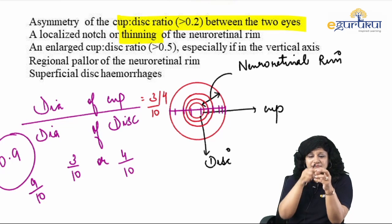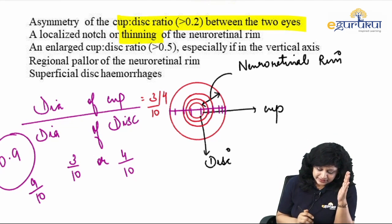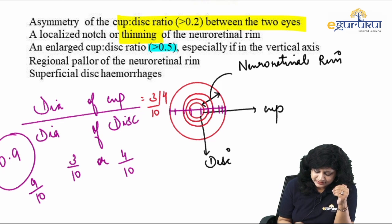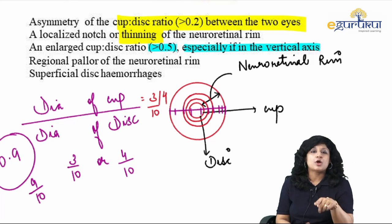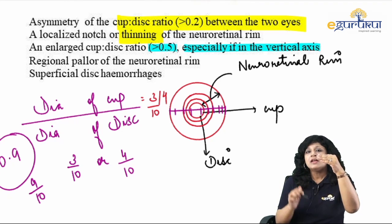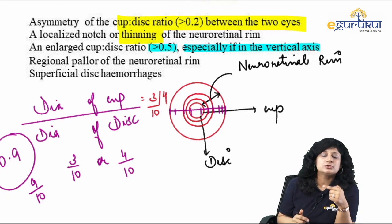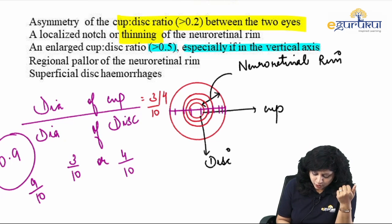There will be thinning of the neuroretinal rim — if CD ratio is more than 0.5 especially in the vertical axis, that is very significant, called vertically oval optic disc cupping. Due to selective loss of superior and inferior fibers, we get a vertically oval cup. If the vertically oval cup is more than 0.5, it is very significant in cases of open angle glaucoma.